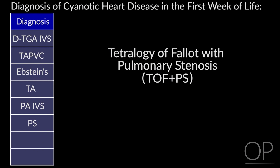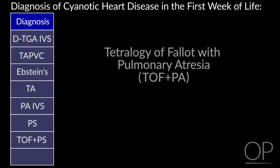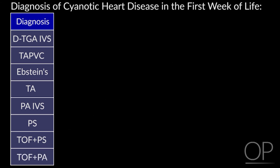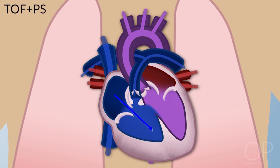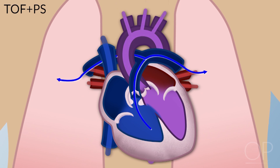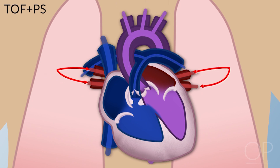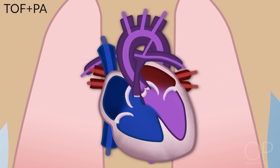Tetralogy of Fallot with pulmonary stenosis, or tetralogy of Fallot with pulmonary atresia. In these kids with a ventricular septal defect and pulmonary stenosis, blood coming back from the body goes right atrium, right ventricle, has difficulty going out through the stenotic valve, so some goes out to the body and some goes through to the lungs and back again. With pulmonary atresia, nothing goes out to the lungs directly, and they are dependent on the ductus arteriosus, getting into difficulty when the ductus closes.